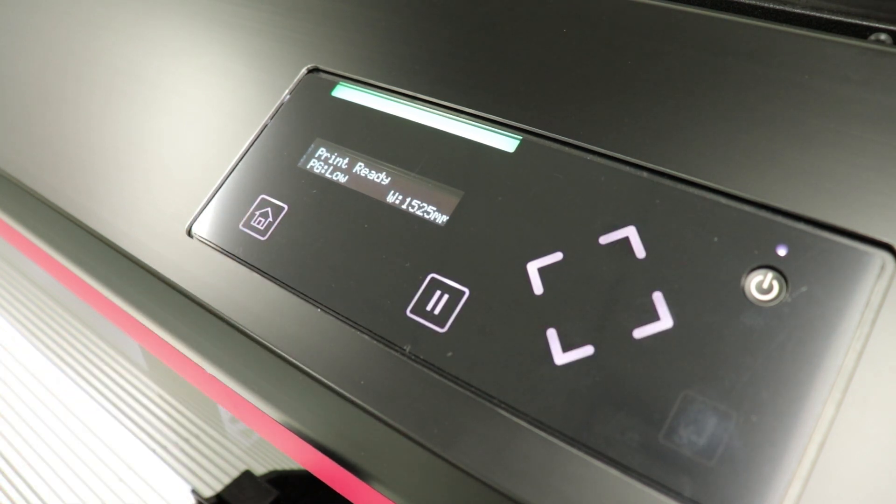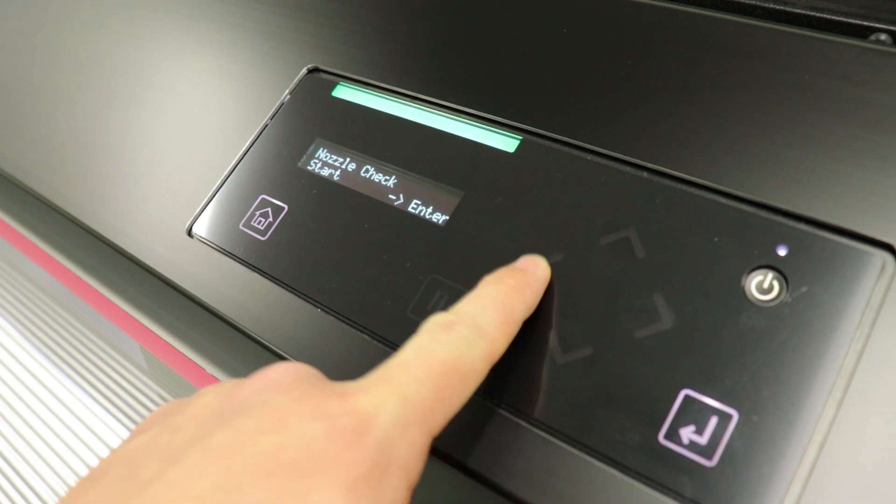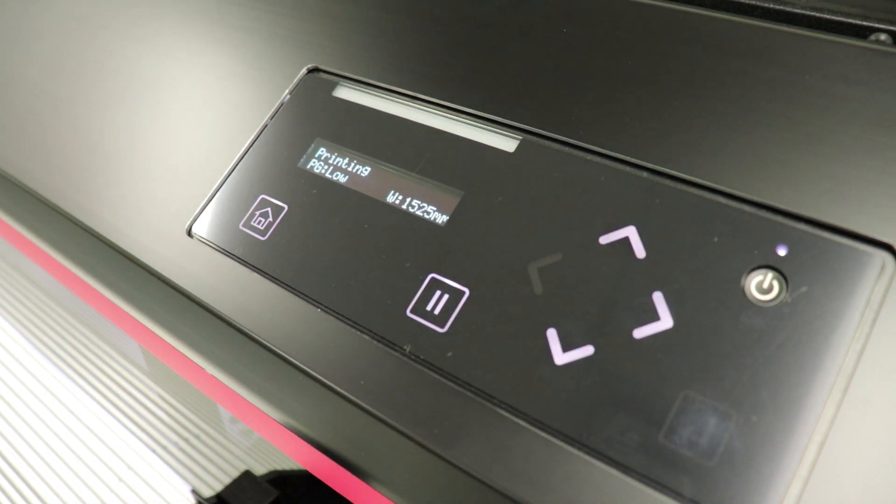Press the home button once more to back out of the menu. If you're on an older ValueJet, hitting the cancel button a few times will get you back to print ready. I always like to hit the nozzle check button just to make sure we have all of our nozzles. As you can see here, we are ready to print.